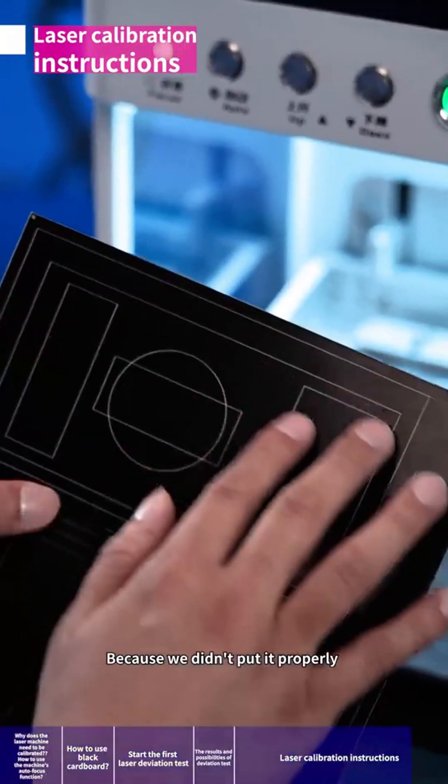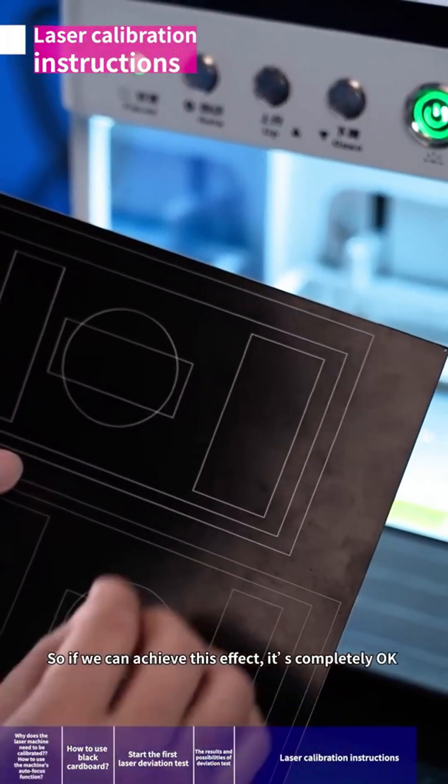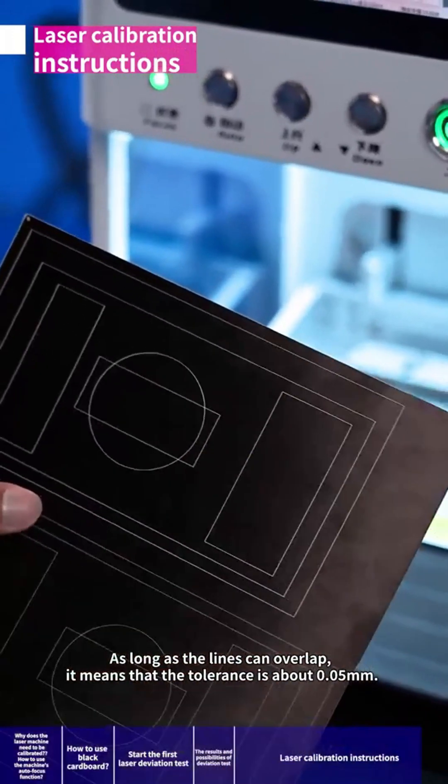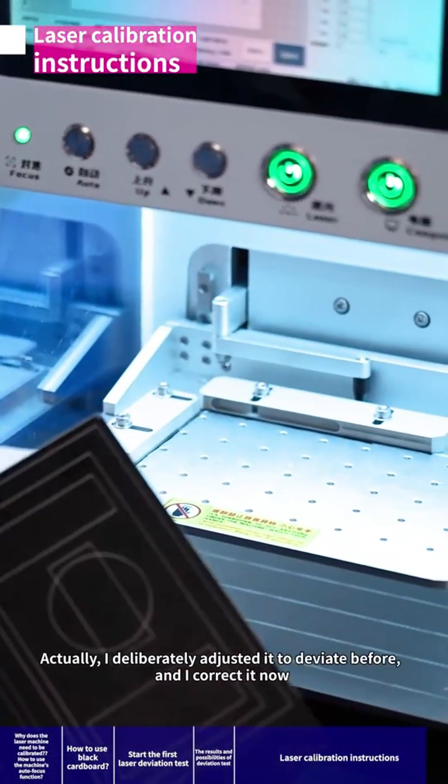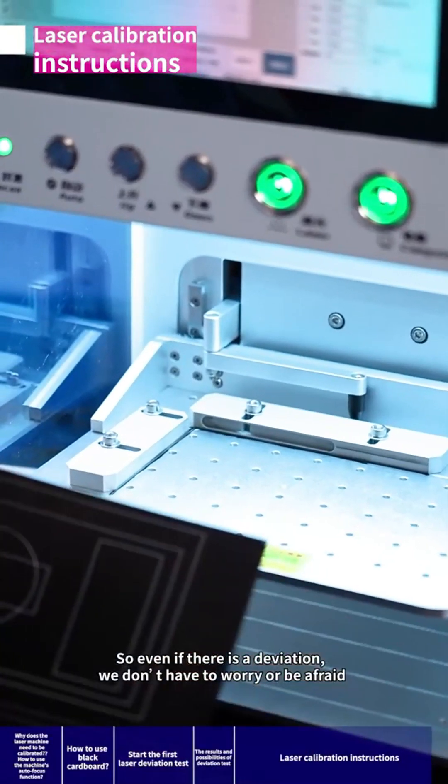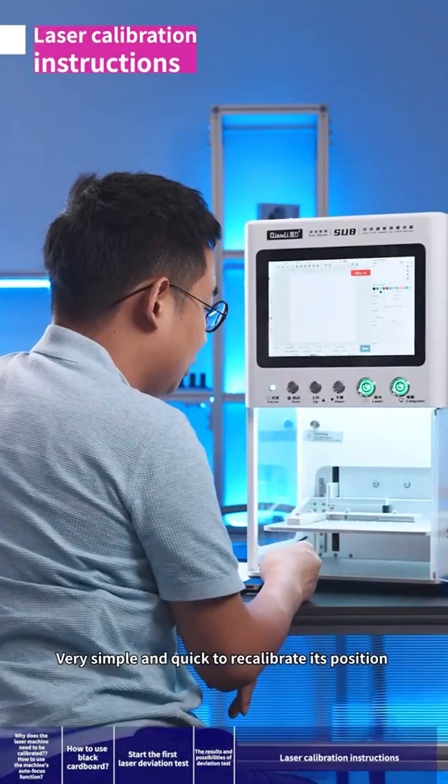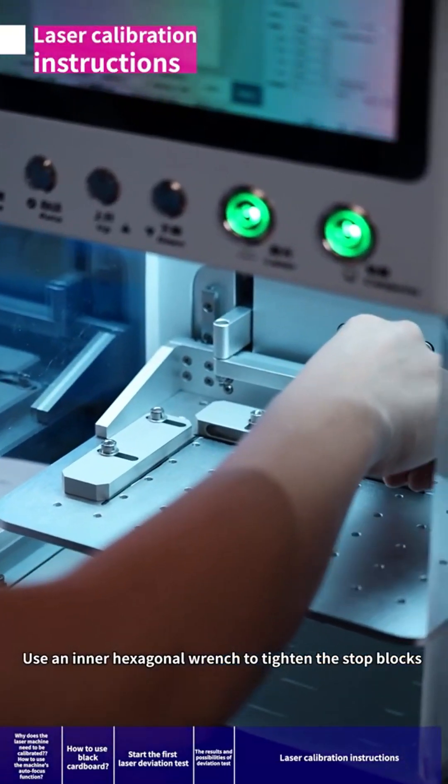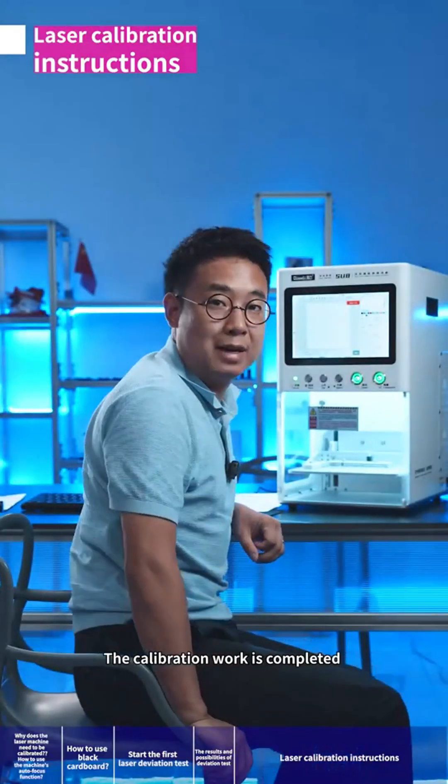But this deviation is completely within the controllable range for lasering the screen or the back cover. So if we can achieve this effect, it's completely okay. As long as the lines can overlap, it means that the tolerance is about 0.05 millimeter. So we don't have to worry about it. This is okay. Actually, I deliberately adjusted it to deviate before and I correct it now. I just adjusted it twice. So even if there is a deviation, we don't have to worry or be afraid. Very simple and quick to recalibrate its position. Now we can make sure that the calibration is done. Use an inner hexagonal wrench to tighten the stop blocks to avoid any moving. Okay, now you can use the machine normally. The calibration work is completed.